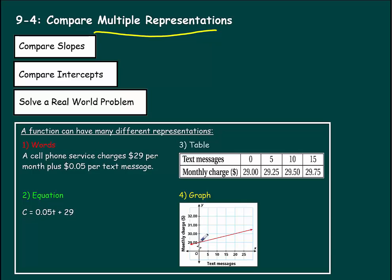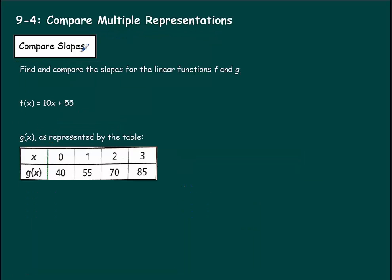And then you could also show a graph — zero text messages gives you $29.00, and 20 text messages gives you a $30.00 bill. So we're going to be comparing different functions using these four different types of representations. First, we're going to compare slopes.